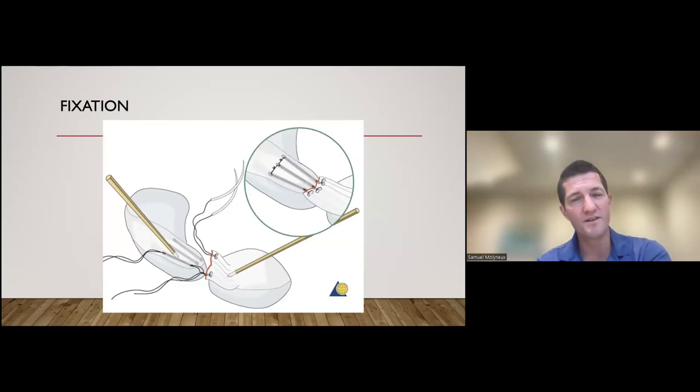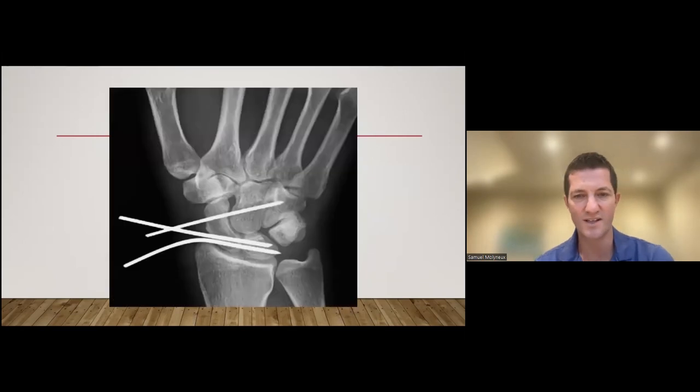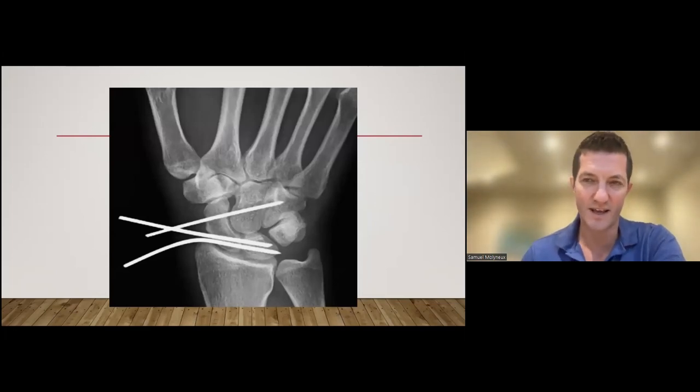For most perilunate dislocations and for scapholunate injury, the key to it all is to repair the scapholunate and to hold the bones in the right place until the scapholunate ligament has a chance to recover. The way to do this is to hold it with K-wires, then to fix the scapholunate, let it all heal, and then remove the K-wires, because your fixation of the scapholunate ligament is never sufficient to hold the carpus in place. So the wires do that until your scapholunate heals up.